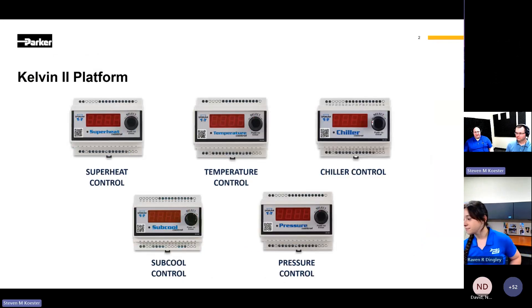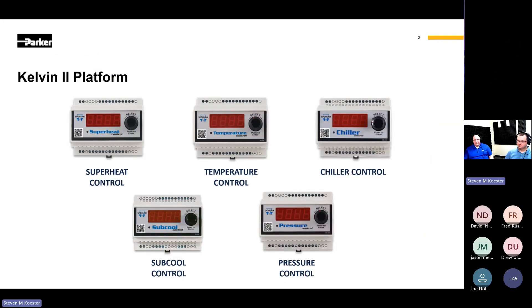Hi, I'm Brandon, and welcome to the Kelvin 2 platform presentation. Kelvin 2 is a stepper valve controller used in various applications on refrigeration and HVAC systems. The Kelvin 2 lineup of controls have advanced features and all can communicate with Modbus, and the superheat, chiller, and pressure control also support BACnet communication protocol. Today we will be giving an overview of the Kelvin 2 platform and how they are used.